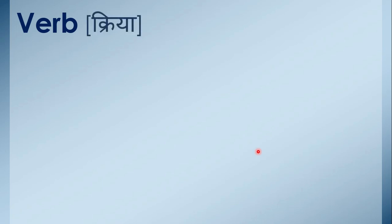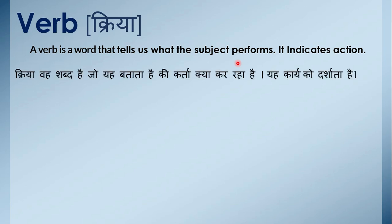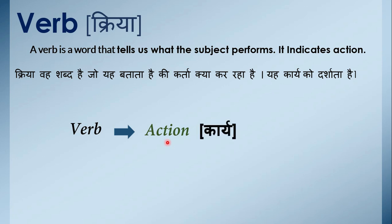Verb kya hootie hai? Verb ko hum Hindi mein kriya bhi kahti hai. A verb is a word that tells us what the subject performs — it indicates action. Verb woh shabd hai jho hume batati hai ki subject kya kar raha hai. Subject hoota hai karta, jho kisi kaam ko karta hai. Usse hum bolta hai subject. Hindi mein hum bol sakti hai ki kriya, verb woh shabd hai jho batata hai ki karta kya kar raha hai — yaha kriya ko darshata hai.